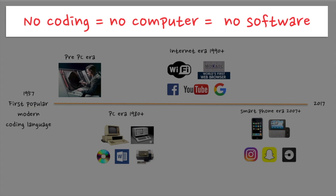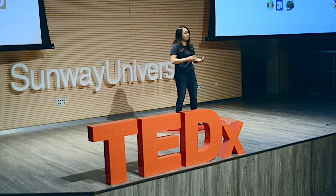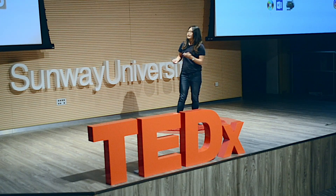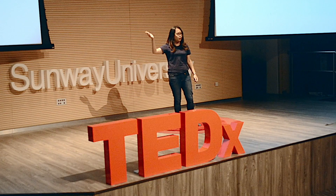It all relates to coding. If there's no coding, there might not be computers, there's no program to run, and there's no software — because software is written with coding language. Look at something as simple as a traffic light or the washing machine at your home.